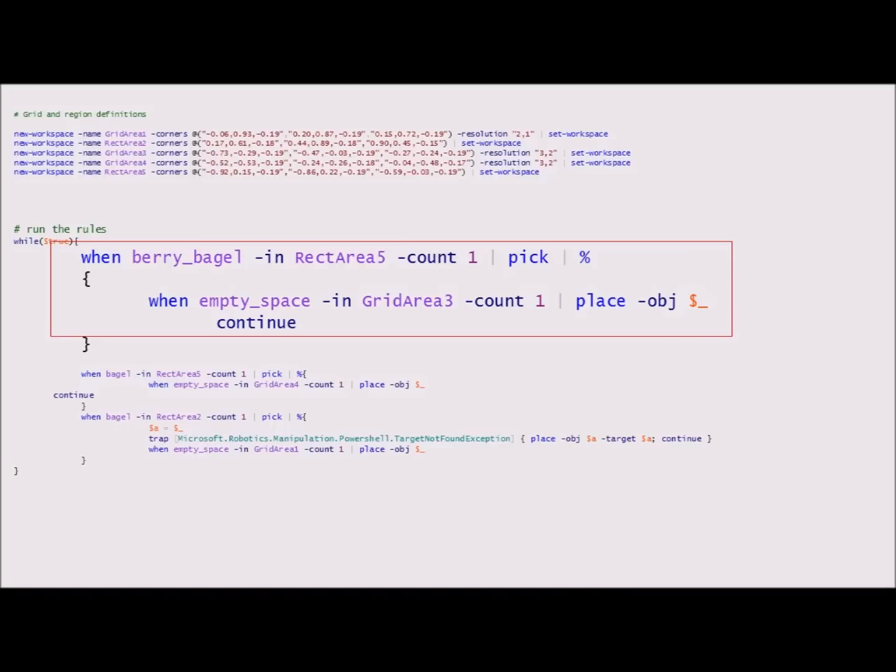For example, the first action checks if there is a berry candidate in Rect Area 5, which corresponds to the exit area of the oven. When the check succeeds, the runtime directs the robot to pick the bagel and place it at the first unoccupied cell in Grid Area 3.